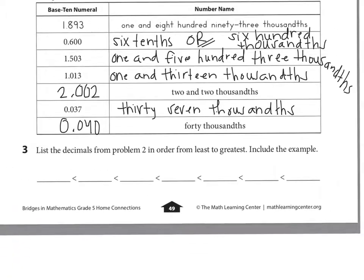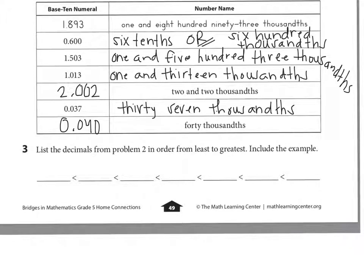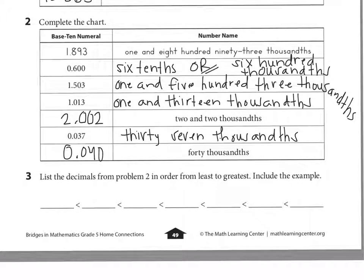Number 3, list the decimals from problem 2 in order from least to greatest. Include the example. So now looking back here, which of these numbers is greatest? Right. This 2 and 2 thousandths is the greatest. Because it has 2 holes, or 2 ones. Do any of the other numbers have 2 ones? No, so that is the greatest.